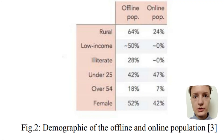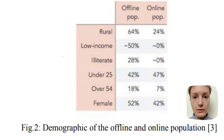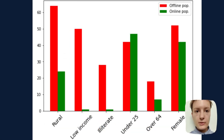In order to represent the demographic information concerning the online and offline populations, the authors choose to use this table in the paper. However, a table makes it harder and less intuitive to comprehend the data. This same information could more easily be depicted as a double bar plot, which would make the dependency of the data between offline and online populations immediately obvious.